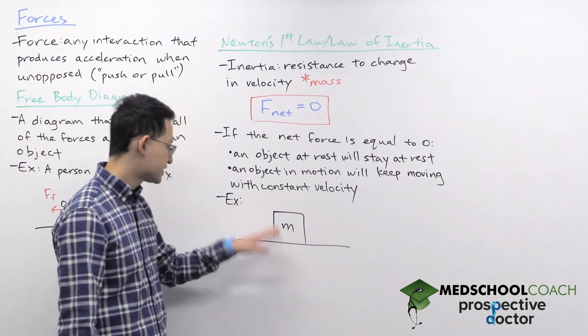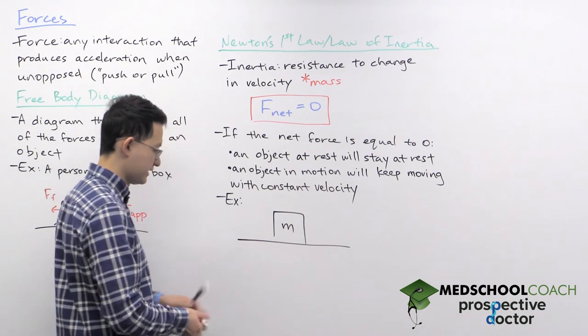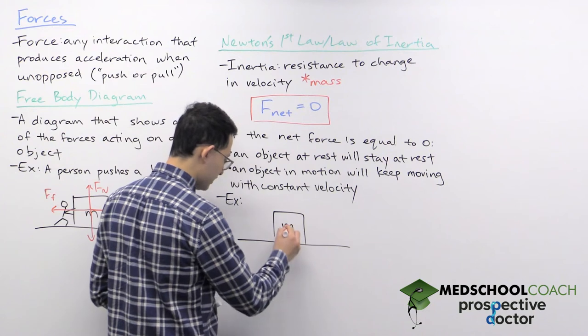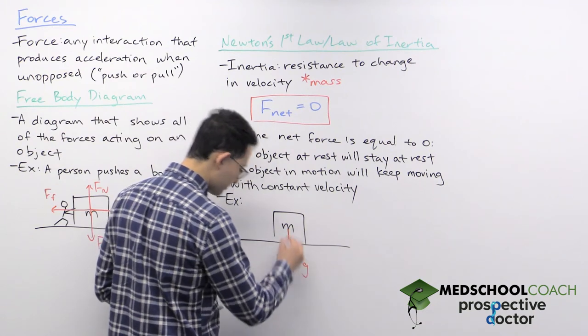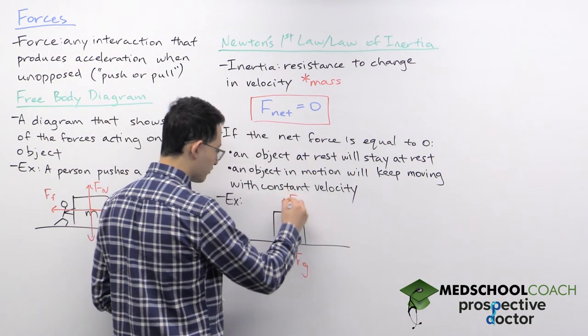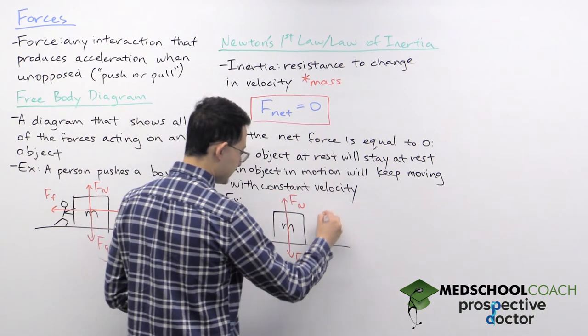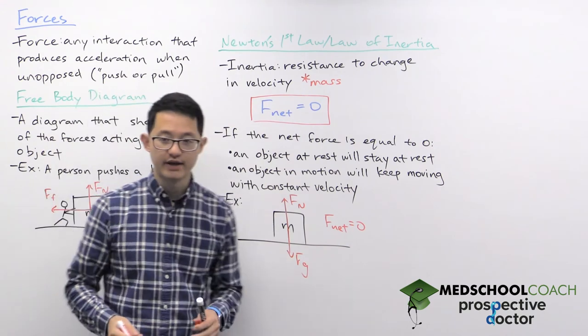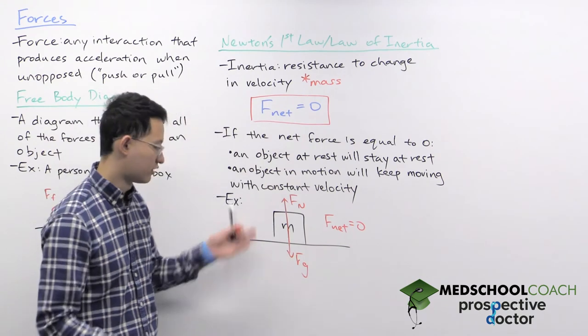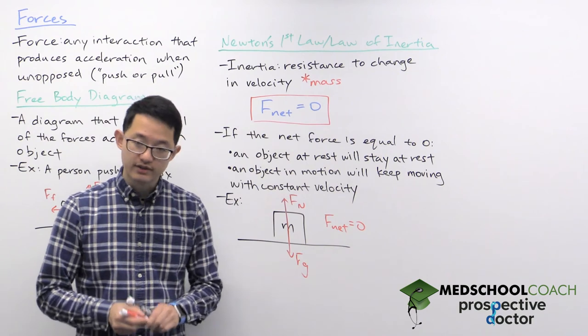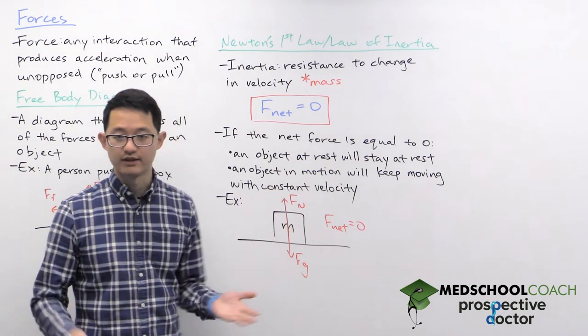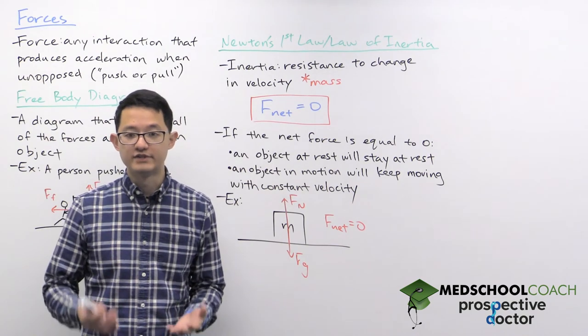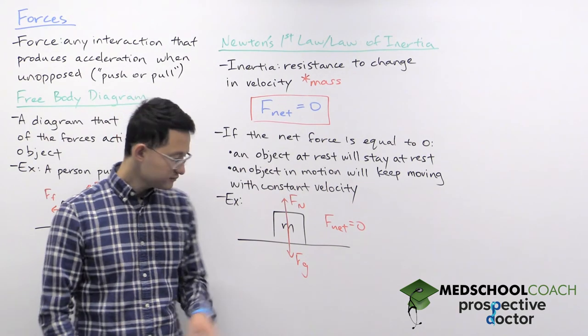Alright, so we can consider one situation here where you have a mass and it's just sitting on a surface. So in this situation, there's nobody pushing on the box. So the only forces acting in the box are going to be the gravity and the normal force. And in this situation, the net force is going to equal zero. And our object is not going to have any velocity. So our object is at rest. So in this situation, based on Newton's first law, we know that this object is going to keep sitting here with a velocity of zero. It's going to stay at rest.